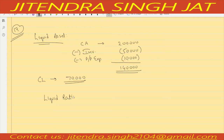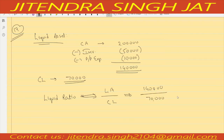Liquid ratio is equal to liquid assets upon current liability: one lakh forty thousand divided by 70,000 is equal to 2 is to 1. I hope it is clear to everyone.